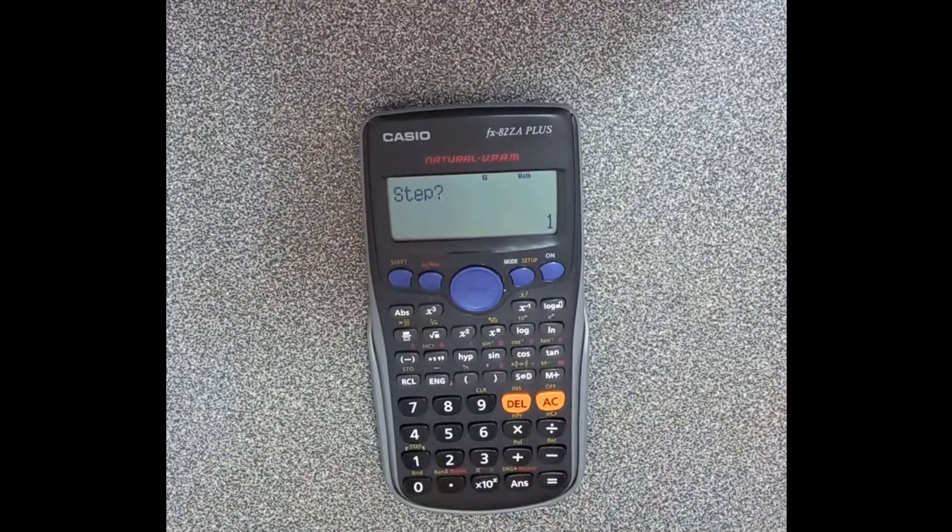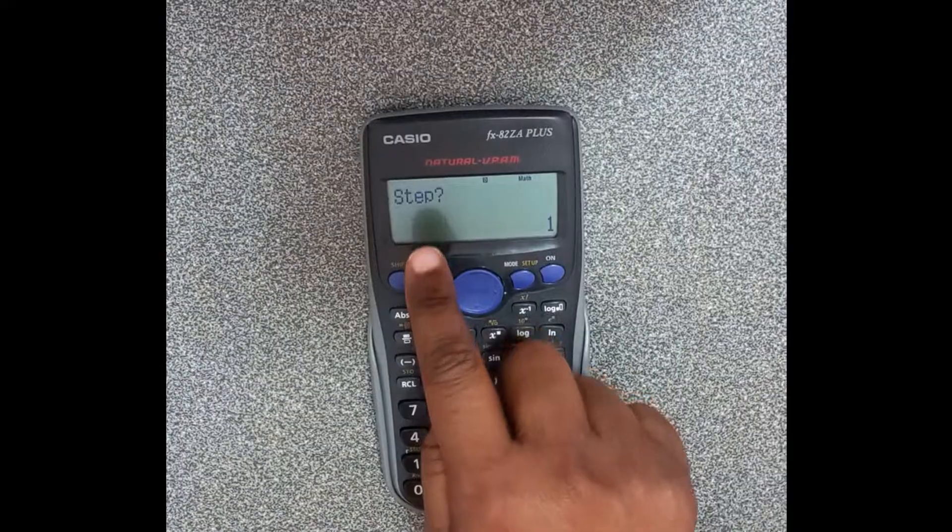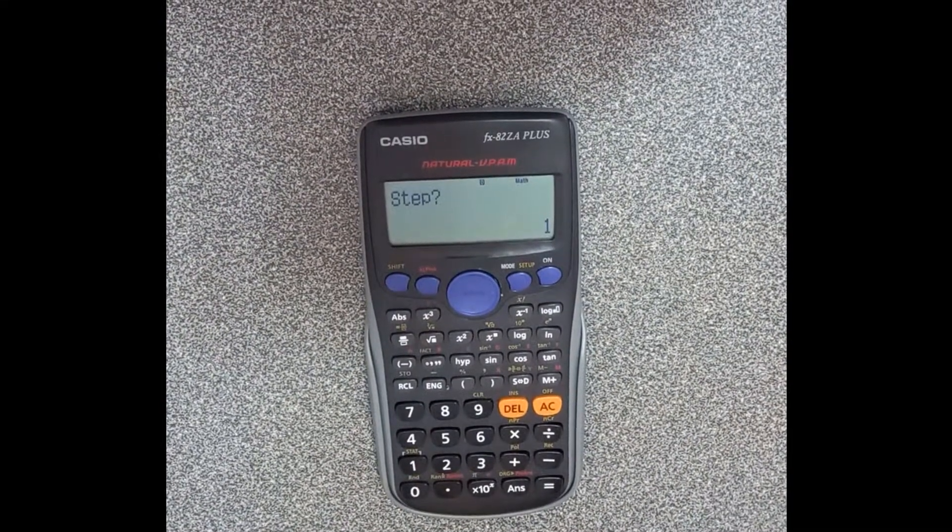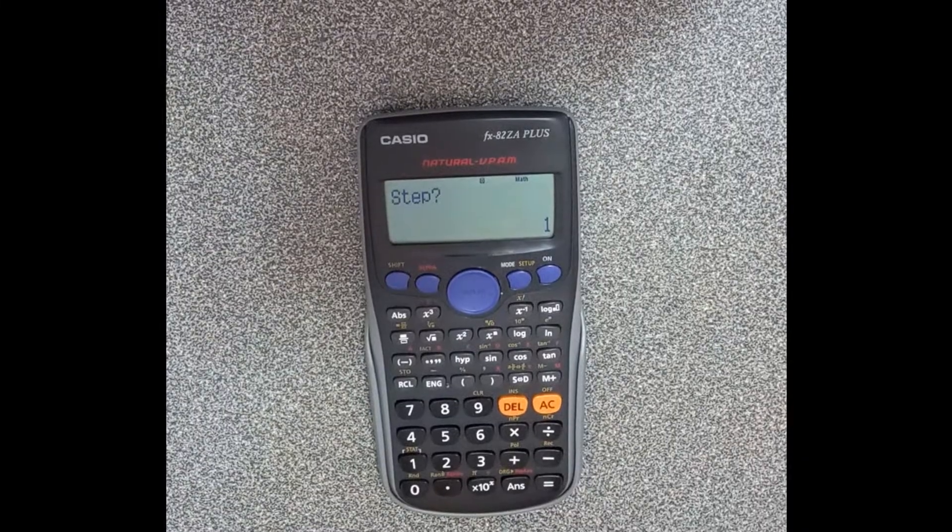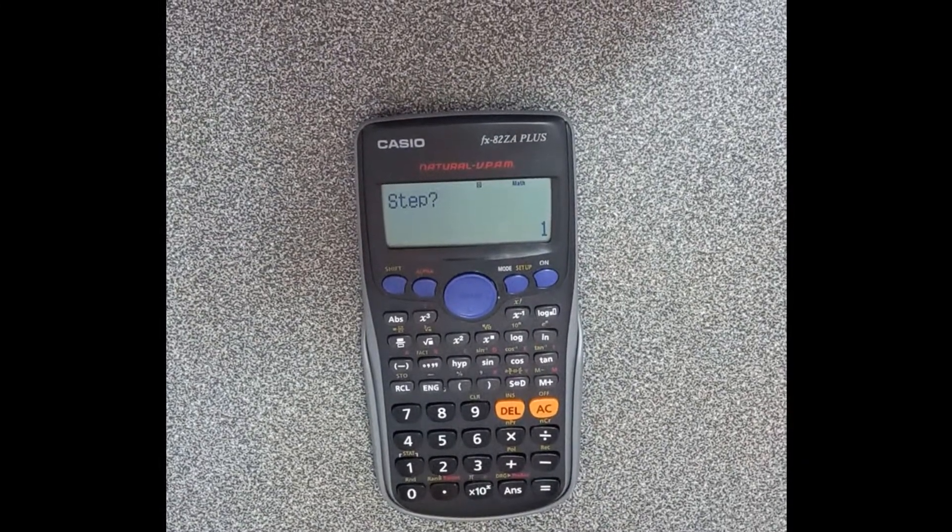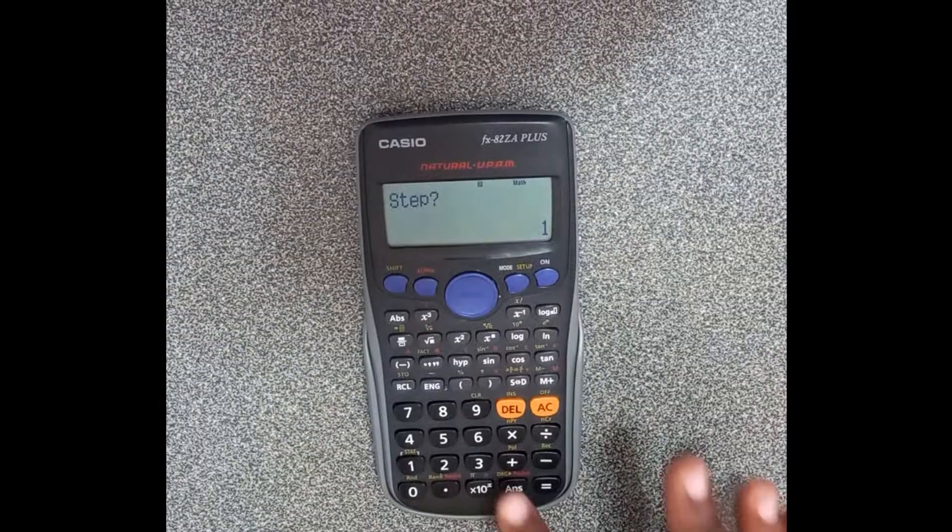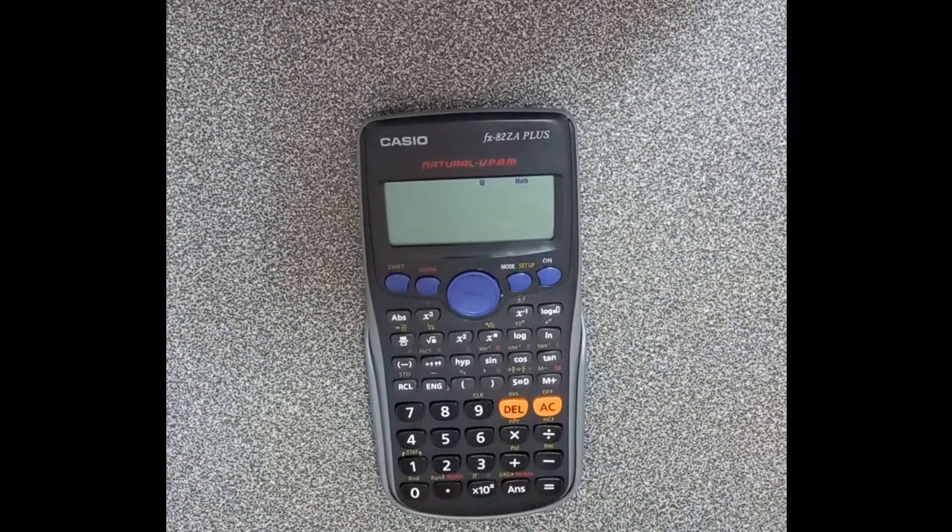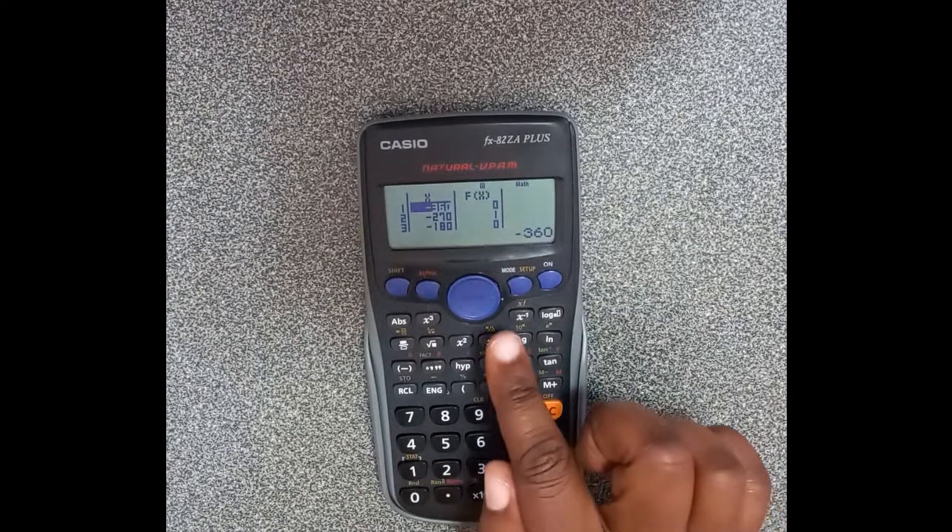Then we say equals. The next thing, when it says steps, it wants the intervals. Remember the sine graph, the cos graph, the interval, there's a change in 90 degrees. So you're going to write 90 degrees and then say equals.